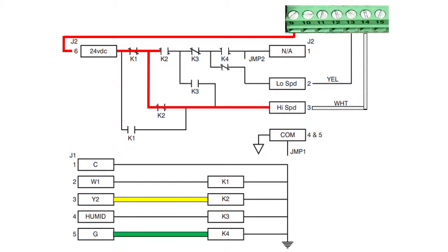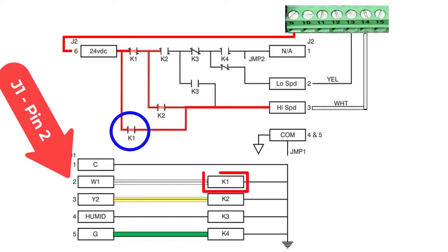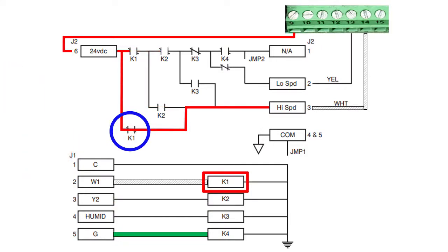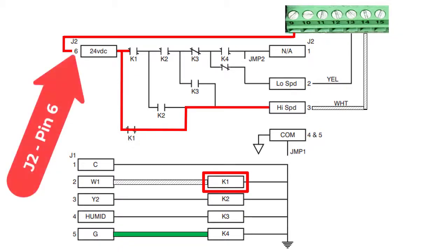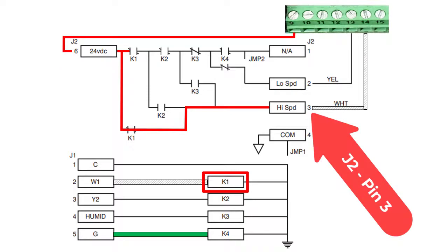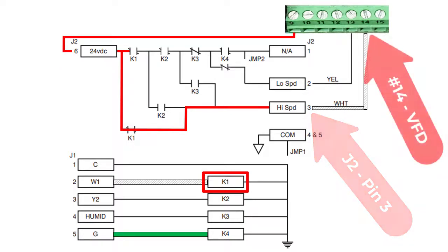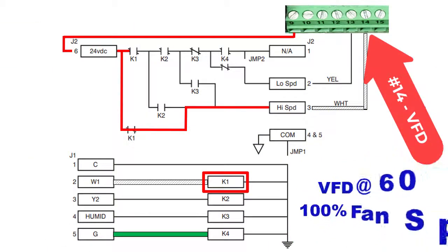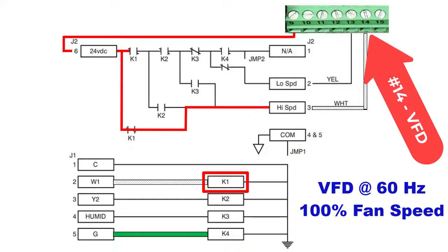During heating operation, an internal path carries the 24V AC W1 signal to the fan control board at J1 pin 2, in turn closing relay K1. When the K1 relay is energized, the 24V DC signal from J2 terminal pin 6 is closed to J2 pin 3, which is returned to the VFD at terminal 14. This initiates a command for the VFD to come to 60Hz, or 100 percent of fan speed.